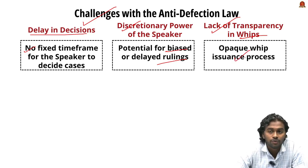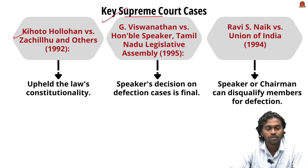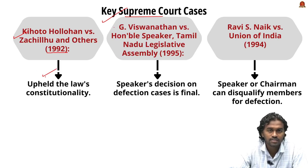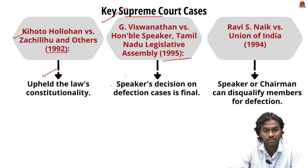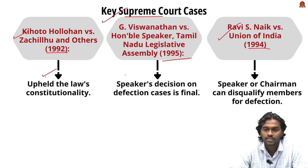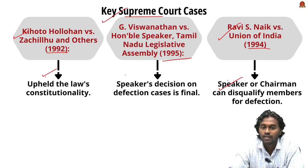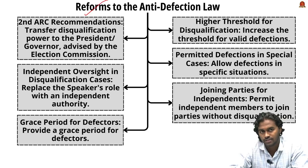Key Supreme Court rulings on defection include: Kihoto Hollohan vs. Zachillhu and Others (1992) — the Supreme Court upheld the constitutionality of the anti-defection law, citing its importance in protecting government stability; G. Vishwanathan vs. Honorable Speaker, Tamil Nadu Legislative Assembly (1995) — the Speaker's decision on defection cases is final and not subject to court challenge; and Rabi S. Nayak vs. Union of India (1994) — confirmed that the Speaker or Chairman can disqualify members for defection, further strengthening the Speaker's decision-making authority.